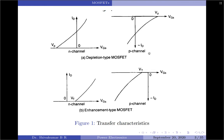For P-channel depletion type MOSFET, the pinch-off voltage is positive but the drain current is negative. Coming to the enhancement type, the threshold voltage VT for N-channel enhancement type MOSFET is positive and so is the current, but for P-channel, the threshold voltage is negative and so is the drain current.